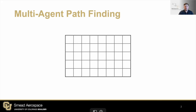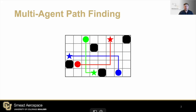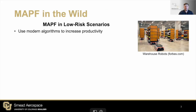Let's assume that we have a two-dimensional grid world environment, and within it we have some obstacles that we must avoid. There are also multiple robotic agents which would like to move from their start locations, the circles, to their goal locations, the stars, while avoiding collisions with obstacles and other agents. This is the traditional multi-agent pathfinding problem, which may be solved using many different provably correct algorithms. These algorithms are used in mobile robotics to increase productivity in low-risk scenarios, such as warehouses.